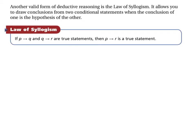Another valid form of deductive reasoning is called the law of syllogism. It allows you to draw conclusions from two conditional statements when the conclusion of one is the hypothesis of another. The law of syllogism states: if 'if P then Q' and 'if Q then R' are true statements, then 'if P then R' is also a true statement. Because the hypothesis of the second matches the conclusion of the first, we can state if P then R.